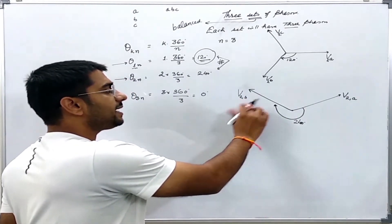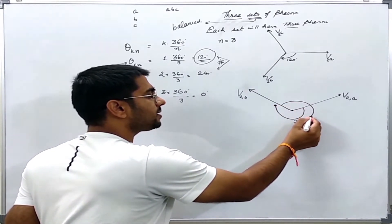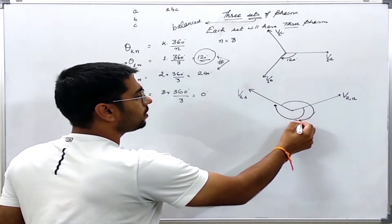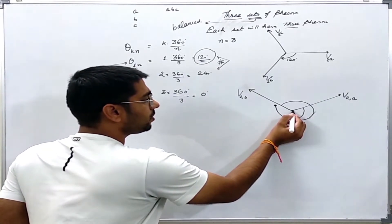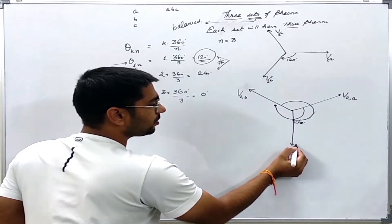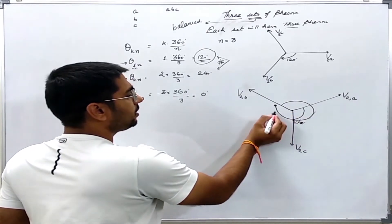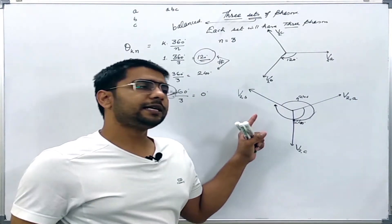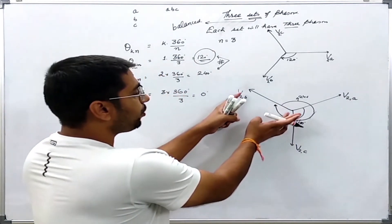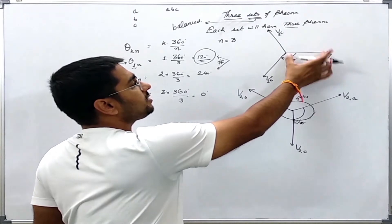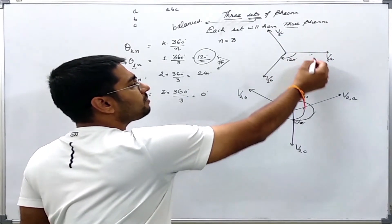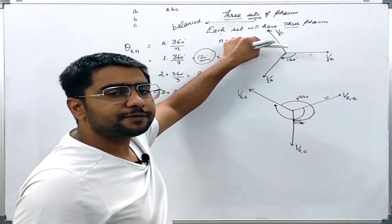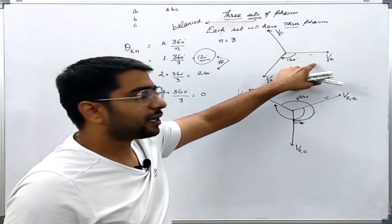The phase C of the second set will also have a 240-degree angle with respect to phase B, and this angle is 240 degrees again. So in this way I have drawn the second balanced set of three phasors. The magnitudes are equal within this set. Similarly, the magnitudes of the three phasors in set 1 are equal with each other, but the magnitude of a phasor from one set might not equal that of a phasor from another set. These sets are balanced within themselves but may not have similar characteristics with respect to other sets.